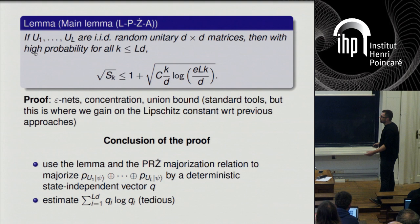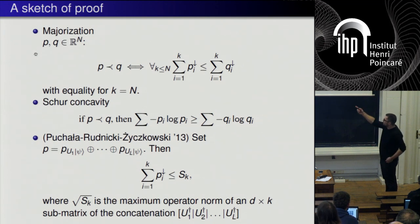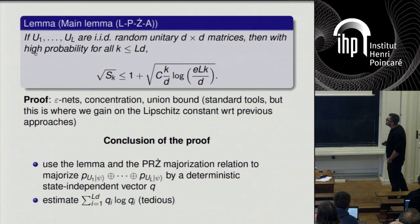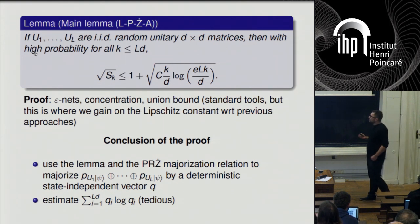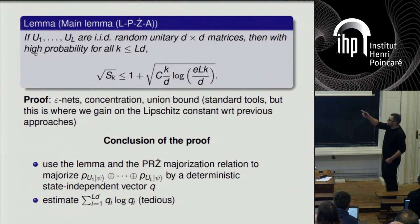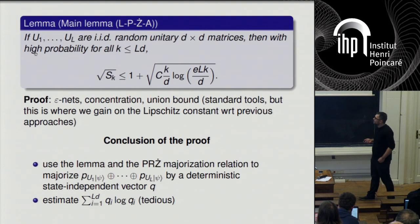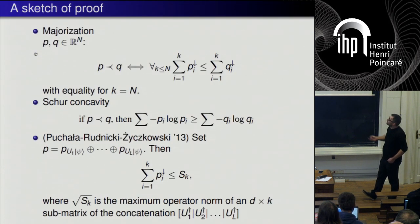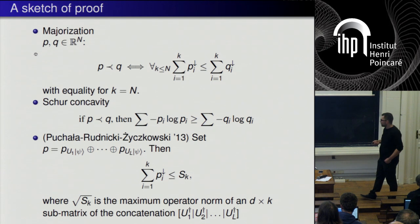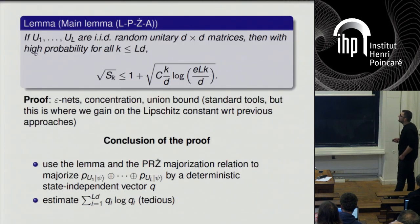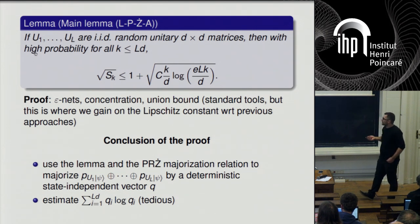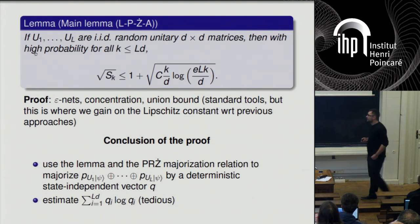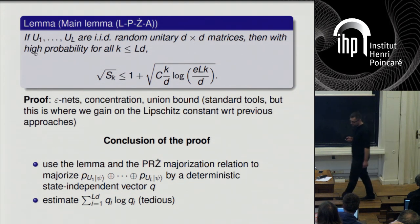The conclusion of the proof is simple: we use the bound on S_k combined with the earlier inequality to find a deterministic, state-independent vector Q that majorizes the concatenated probability vector. Then we use the Schur-concavity of entropy to bound the sum of Shannon entropies by the same function evaluated on Q. Estimating this function is tedious but straightforward calculation.